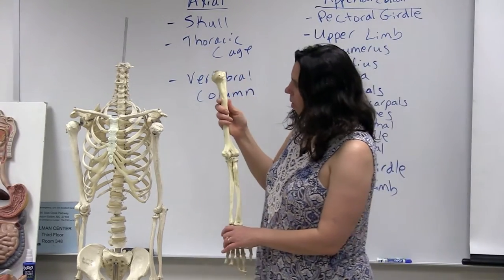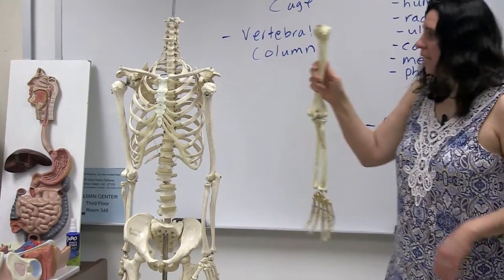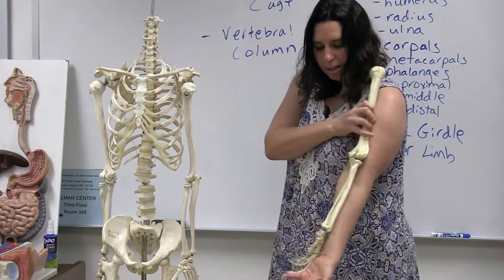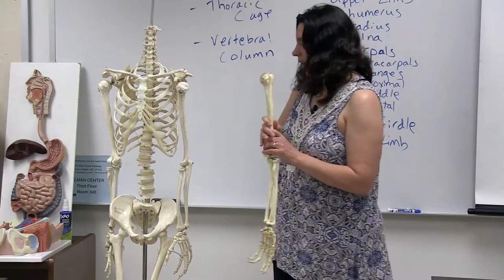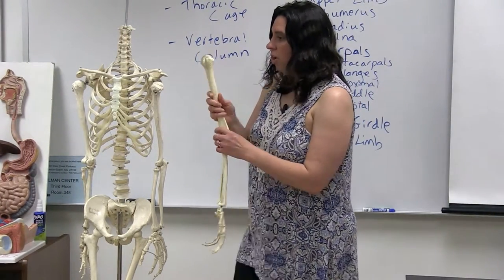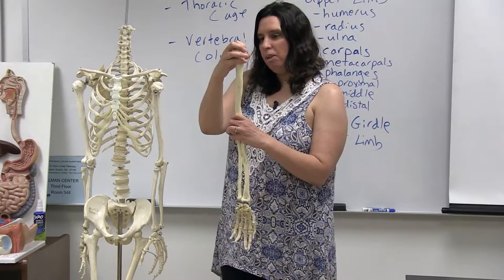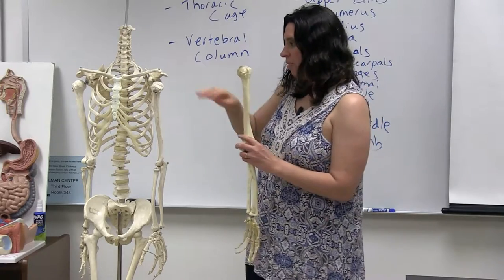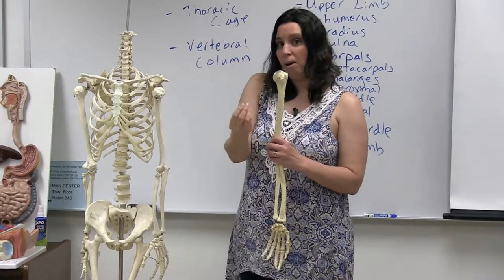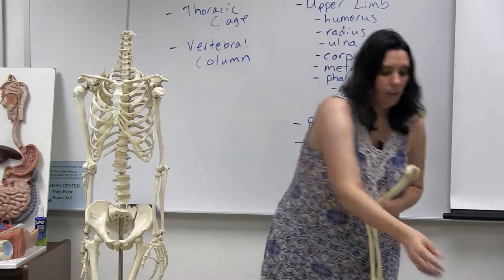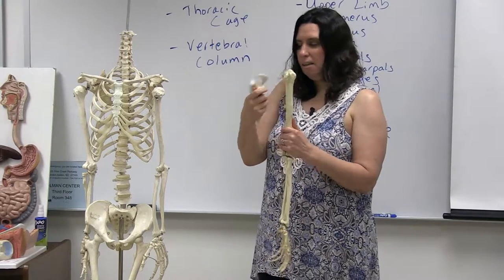If you look at the upper limb as a whole you can see how the humerus connects to the rest of the upper limb. This particular humerus is actually from the left side of the body — just remember that everything in the appendicular skeleton is duplicated. A major feature to notice is the head of the humerus at the proximal end, meaning it's closest to the point of attachment at the scapula. The head of the humerus is the ball part of the ball-and-socket shoulder joint, fitting into the depression on the scapula called the glenoid cavity — a very shallow depression.